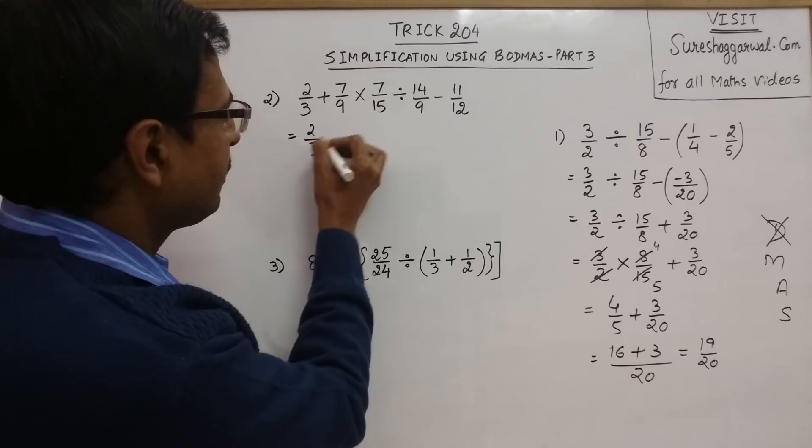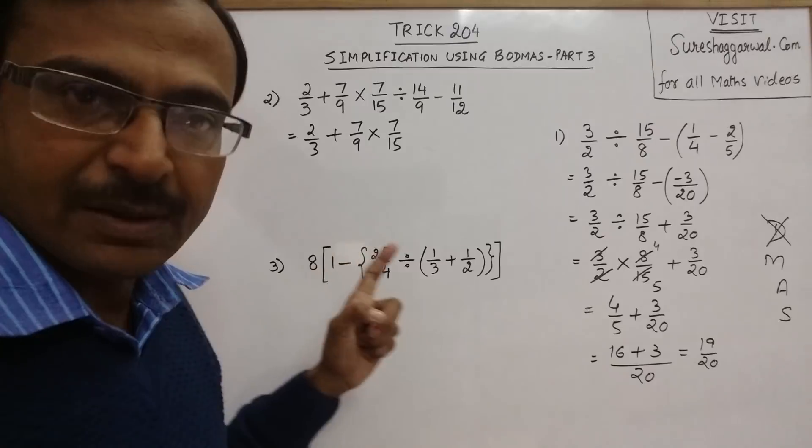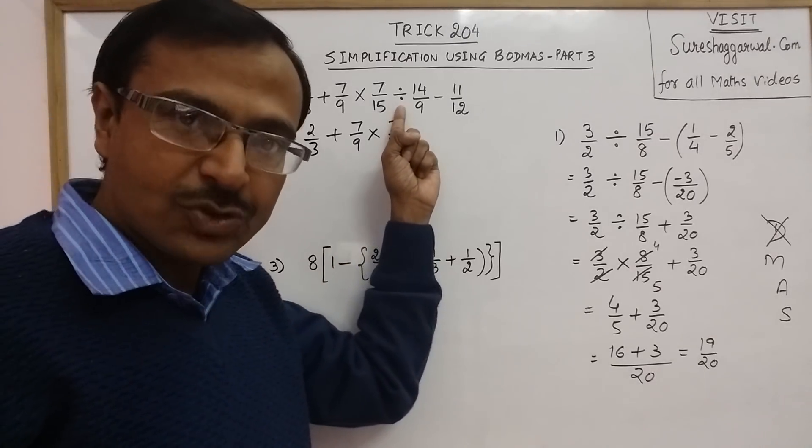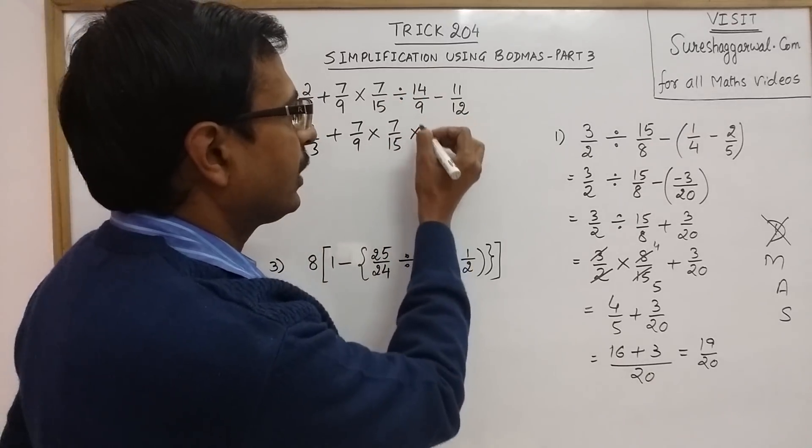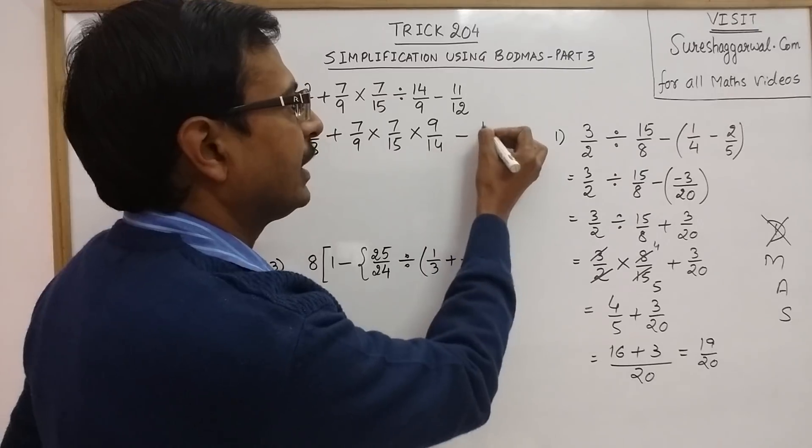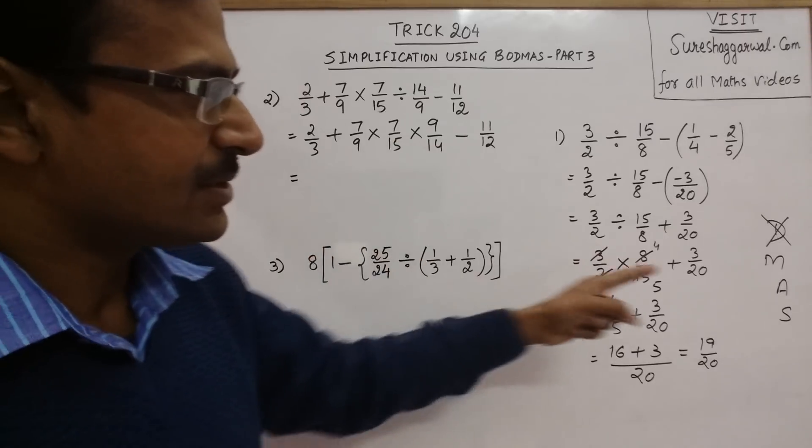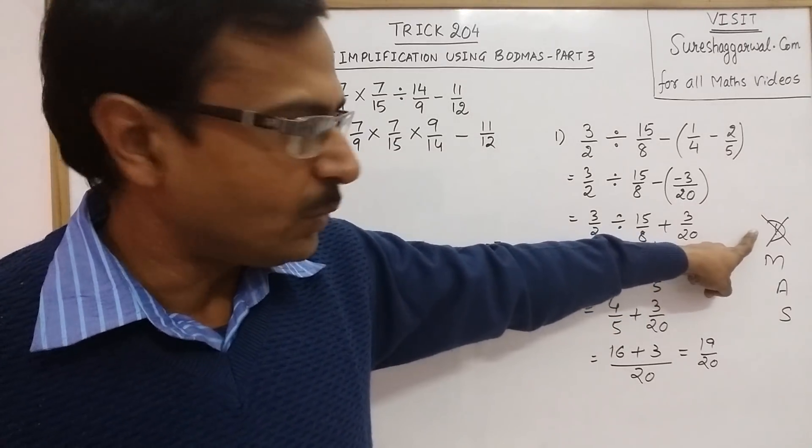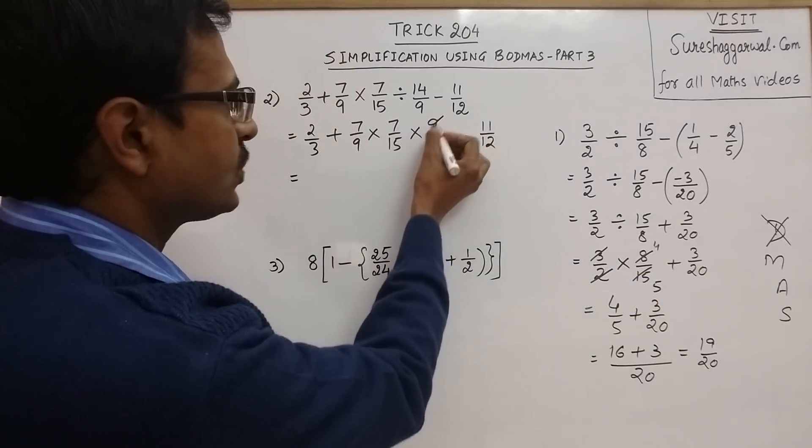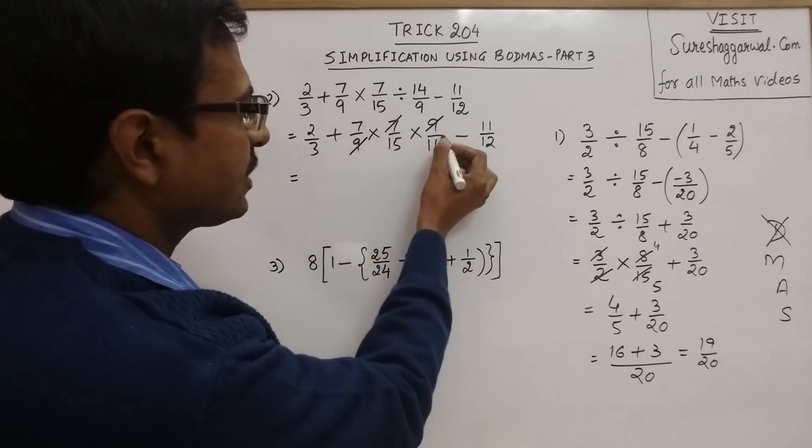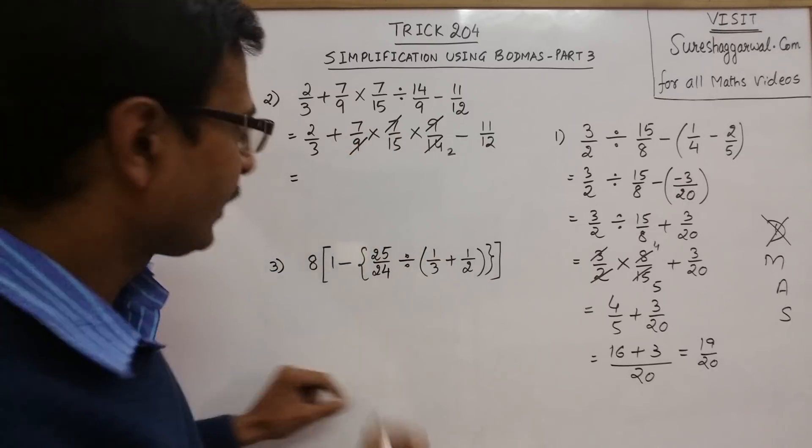So 2/3 plus 7/9 into 7/15, everything remains same. Only thing is this division sign has to be converted now. Division becomes multiplication and 14/9 becomes 9/14, minus 11/12. Now you see you have two multiplication signs. Once you have got rid of the division sign, you have to deal with the multiply sign. These are three terms in multiplication. So 9 cancels out and 7 cancels out two times. Nothing else is cancelling because there is no common factor now.